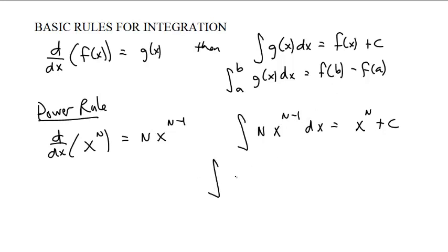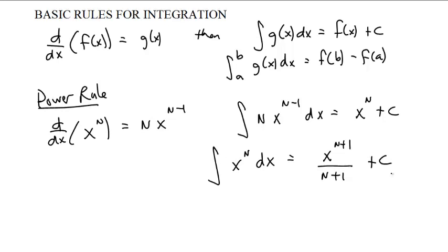In general, we say that the antiderivative of x to the n dx is x to the n plus 1 over n plus 1 plus c, if n is not negative 1.